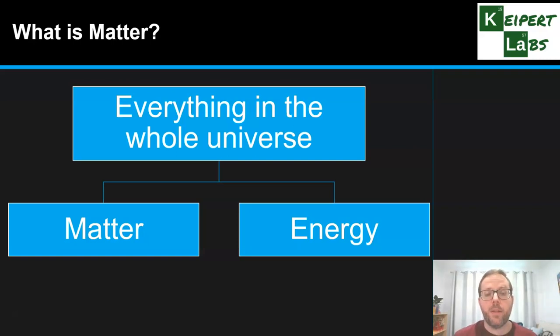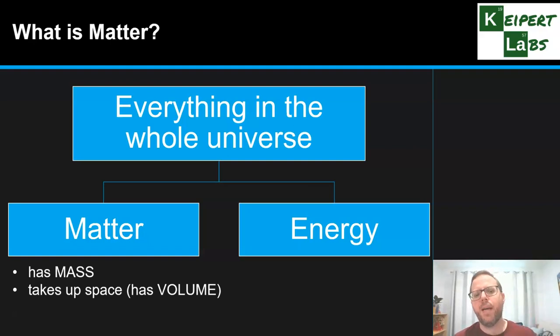And so then it becomes a question of, well, how do we decide whether something fits into matter or energy? There's two particular aspects that scientists use or features that matter has. Matter has mass and matter takes up space. That is, to be more precise, matter has volume. So anything that has mass and has volume is considered to be matter. If it doesn't have mass and it doesn't have volume, then it fits into the category of energy.